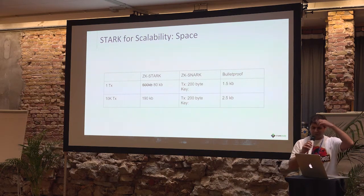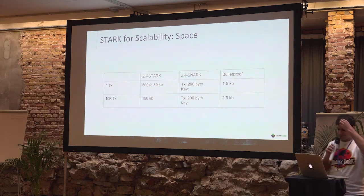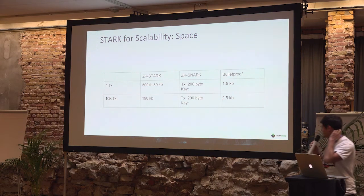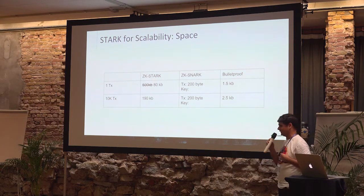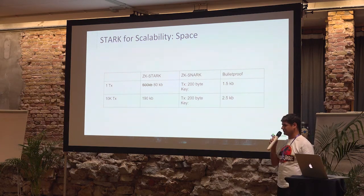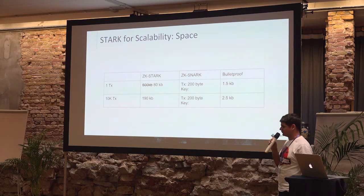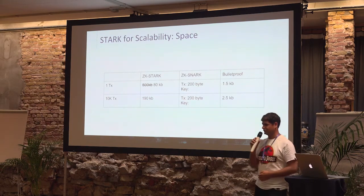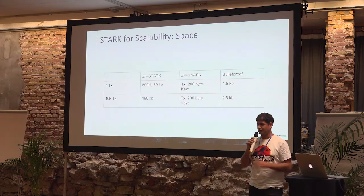What's important to notice is that when you go from proving one shielded transaction to a batch of 10,000 shielded transactions, the proof size only grows to less than 200 kilobytes. And now you can prove 10,000 shielded transactions — you're not paying linearly, not in the verification time and not in the proof length.